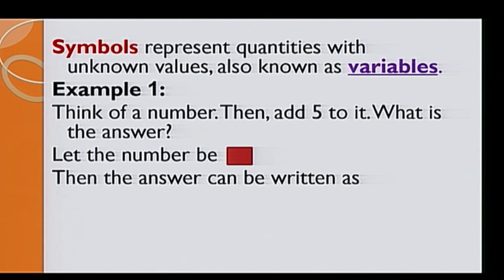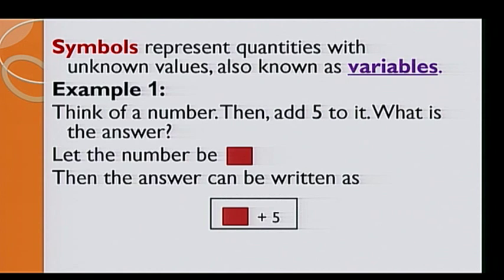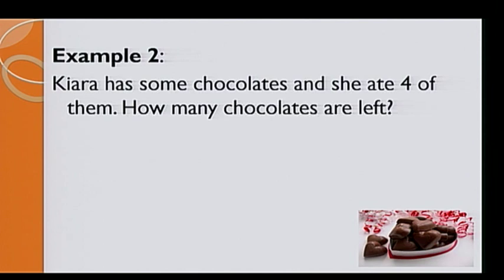This is the statement. Let's have a look at example 2. Kiara has some chocolates and she ate 4 of them. How many chocolates are there? Let the number of chocolates be the symbol. The symbol triangle is representing the number of chocolates Kiara has. She ate 4. That is, the number of chocolates left should be less. Therefore, we take away 4 from the triangle, which leads us to this statement. The triangle minus 4.